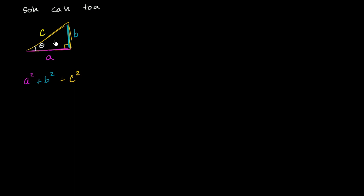So let's think about sine of theta. So sine of theta, I will do it in this blue color. So sine of theta is what? It is opposite over hypotenuse. So it is equal to the length of b, or it is equal to b over the length of the hypotenuse, which is c.